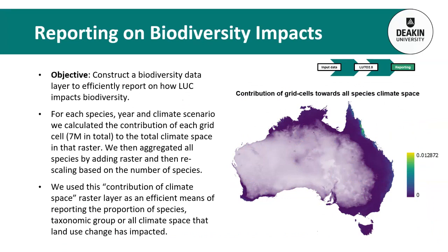The final step involved developing a framework to report on how land use change impacts biodiversity. We adopted a System of Environmental Economic Accounts (SEEA) style accounting framework. We constructed a raster representing the contribution of each grid cell to all species' climate space. This layer allowed us to efficiently sum across cells to quantify the proportion of climate space covered by different land use types. For each species, year and climate scenario, we calculated the contribution of each of 7 million grid cells to total climate space, then aggregated species by taxonomic group and rescaled by number of species. This approach also emphasizes places with small-ranging species, where each grid cell contributes proportionally more to that species' total climate space.